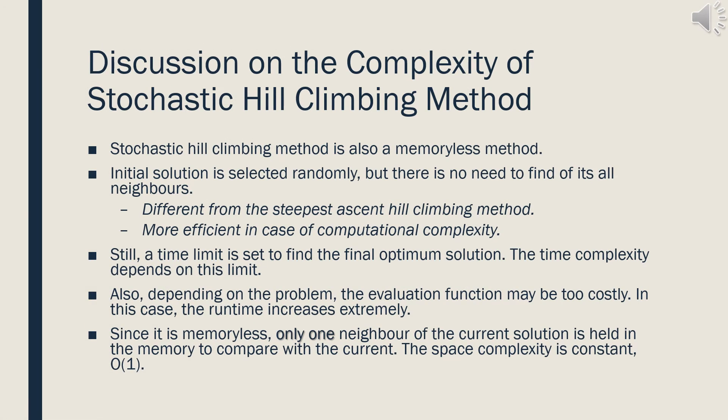Stochastic hill climbing is also a memoryless method, with the initial solution selected randomly. Different from steepest ascent hill climbing, there is no need to find all neighbors. That's why stochastic hill climbing is more efficient in terms of computational complexity. Still, a time limit is set to find the final optimum solution, and the time complexity depends on this limit. The evaluation function may be too costly depending on the problem, increasing runtime. Since it is memoryless, only one neighbor of the current solution is held in memory. The space complexity is O(1).